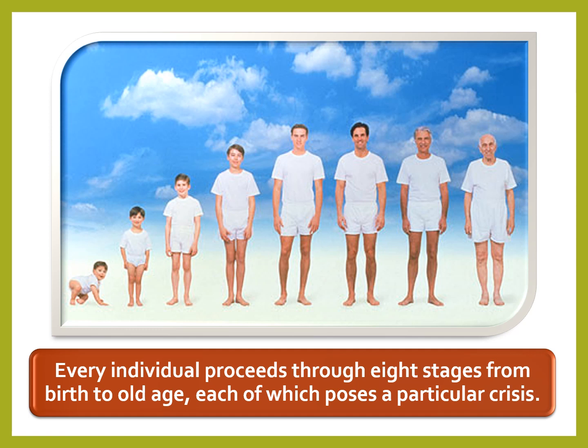Stage three is the preschool stage. Stage four is the early school years, where development centers around industry and inferiority. This stage begins at age six and lasts until age eleven. If a teacher, caregiver, or peers offer support and a sense of accomplishment, children feel competent and productive. If they don't receive positive reinforcement, they may feel inferior or incompetent.